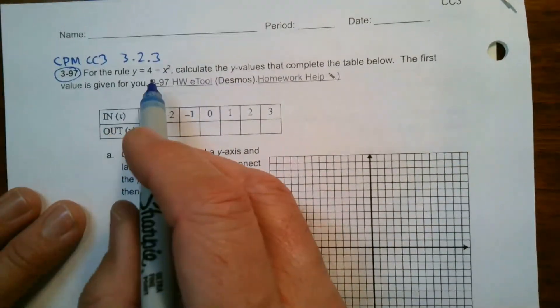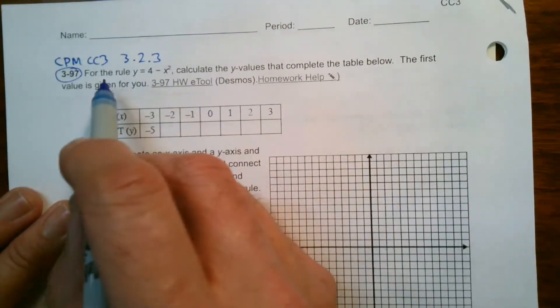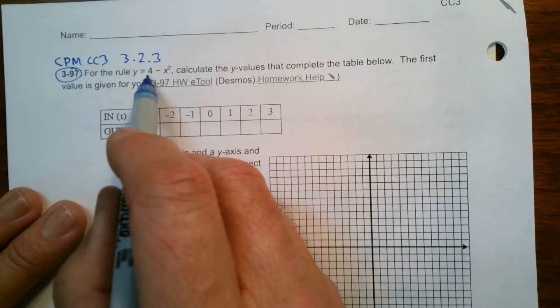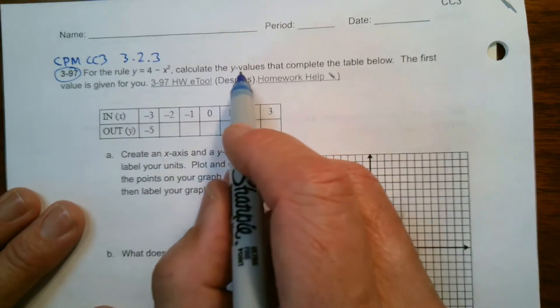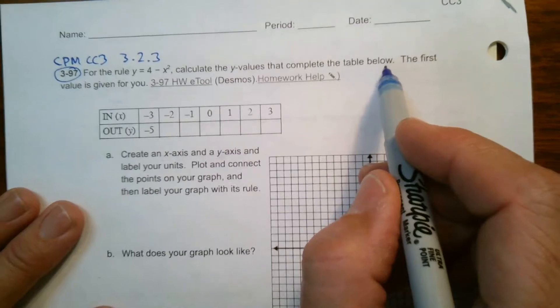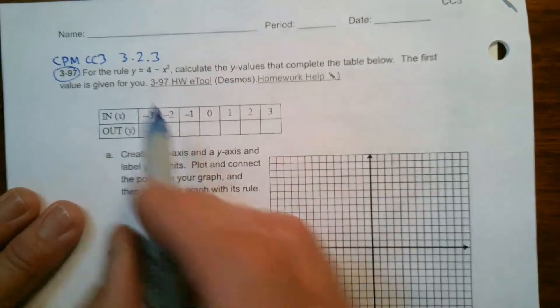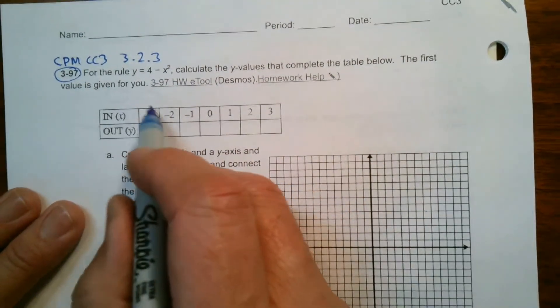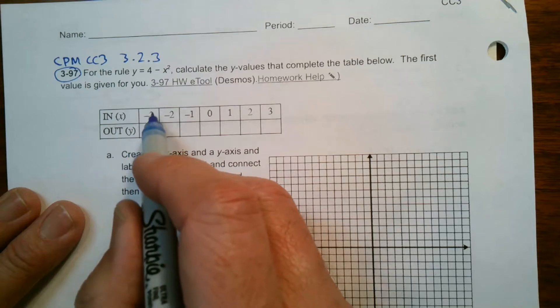So here's my rule. My rule is, I'll read the directions for the rule. Y equals four minus X squared. Calculate the Y values that complete the table below. The first value is given for you. So that's nice. They give me a hint here if I need to check.